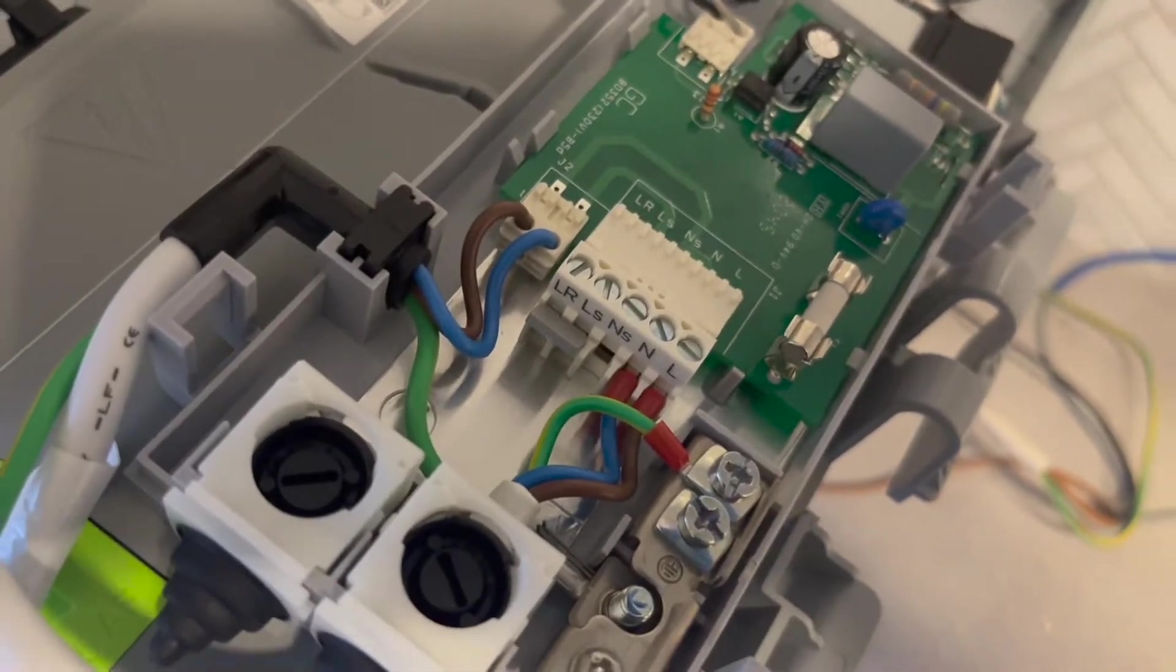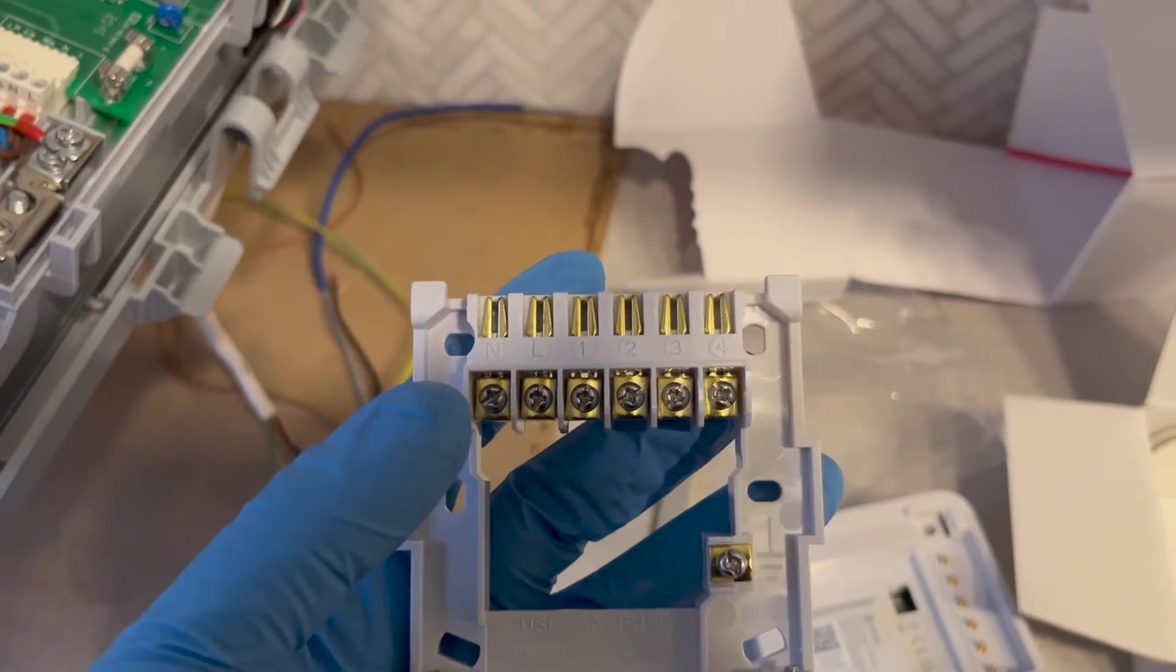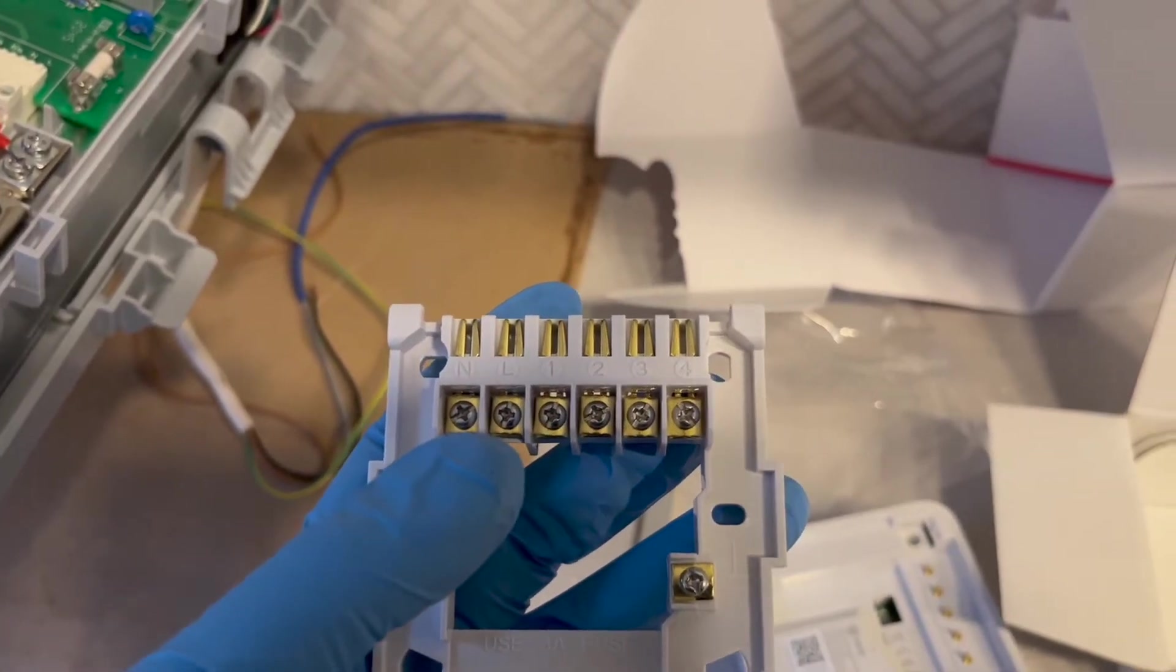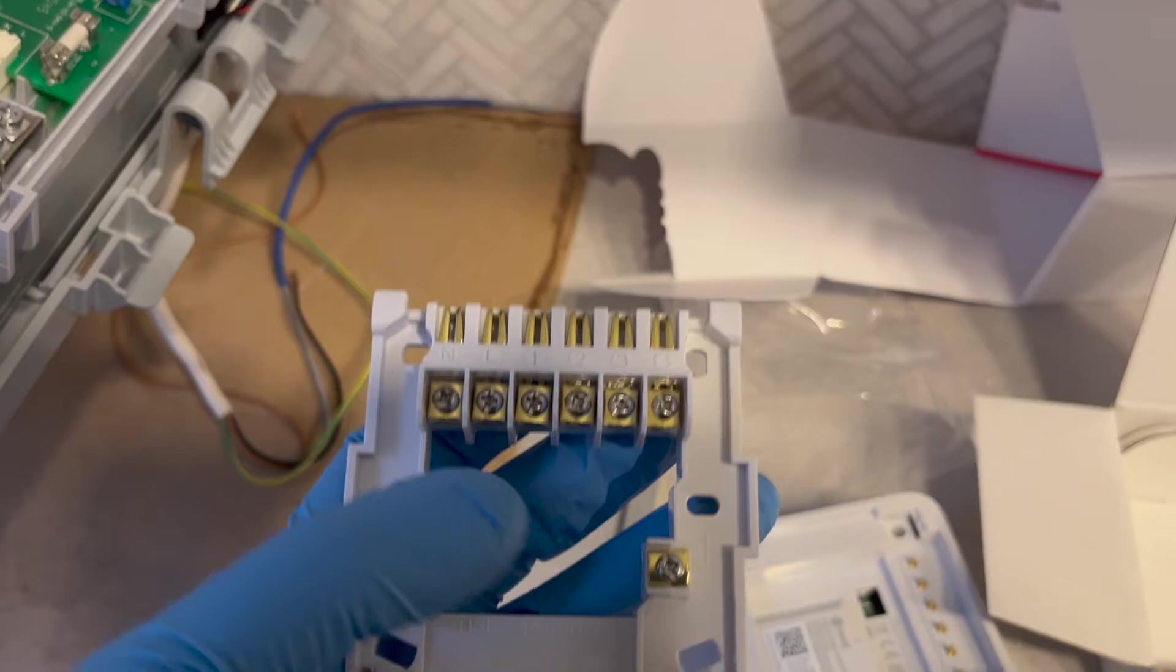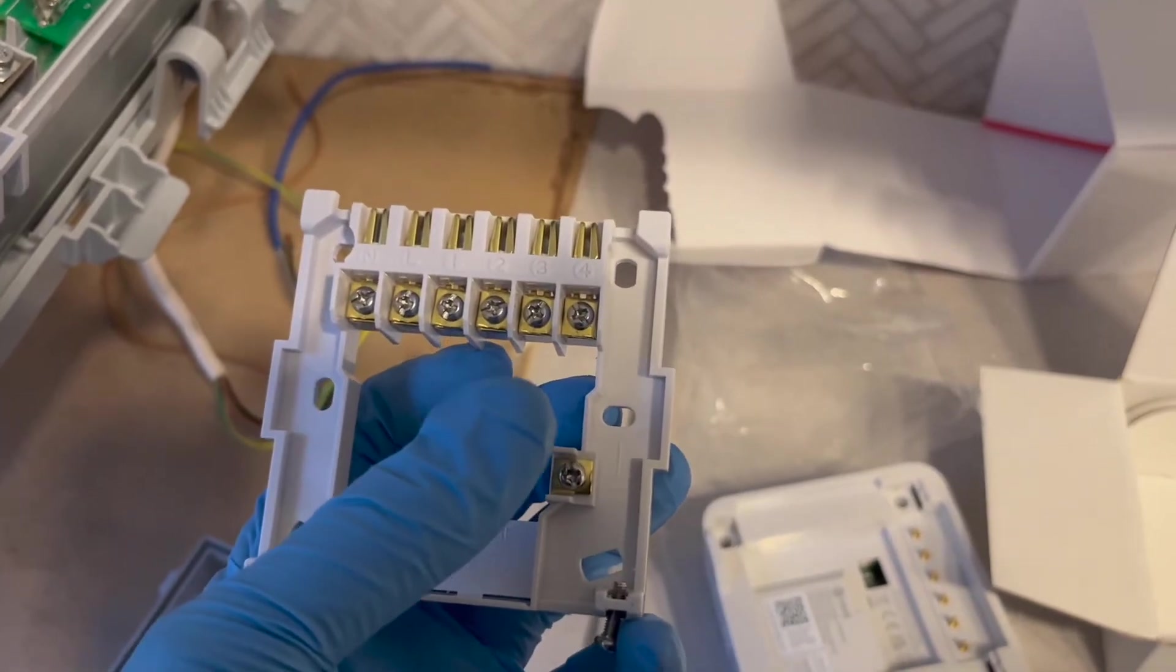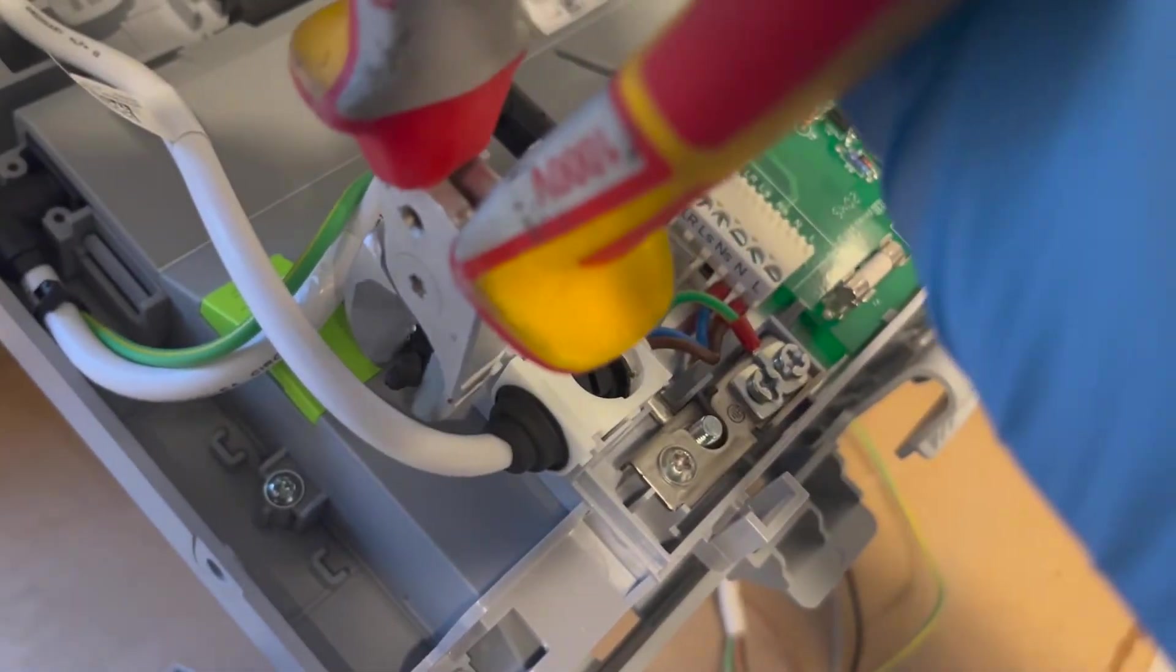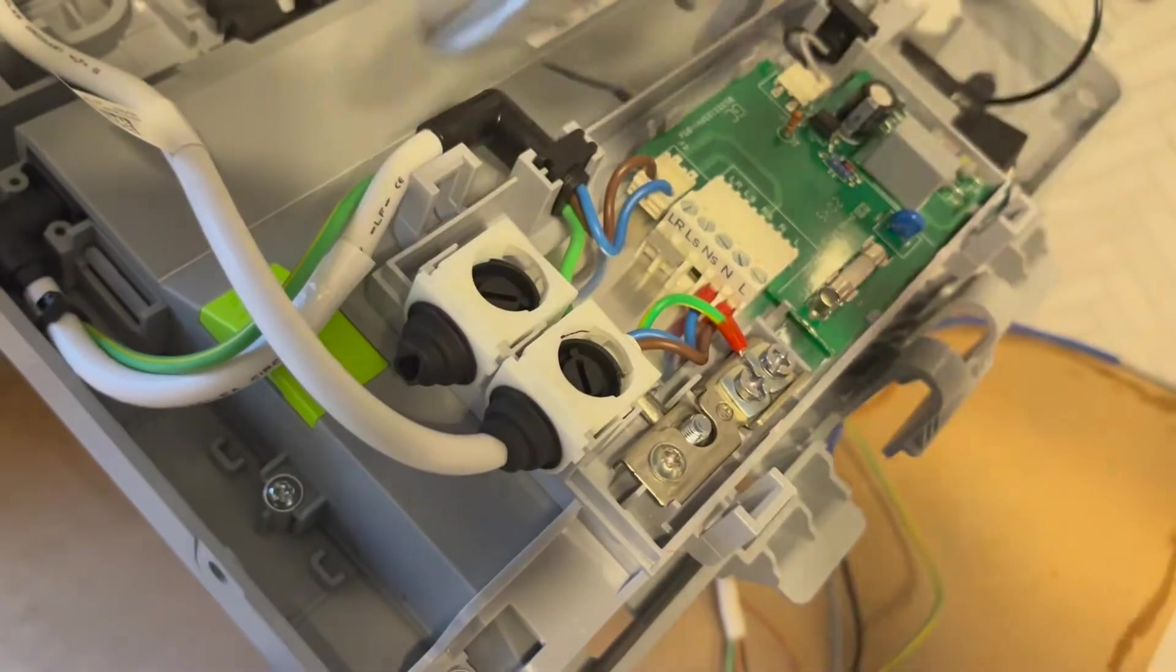LR, LS, and NS. In terms of the receiver, we'll be using neutral, live, a link between live and one, and then we'll also be using number three. First thing, if we just cut a little hole into this rubber so we can shove our cable through.